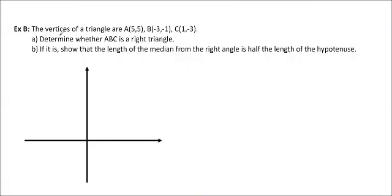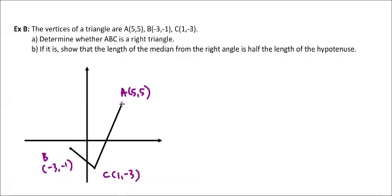We're going to do one more example. The vertices of a triangle are A(5,5), B(-3,-1), and C(1,-3). Determine whether ABC is a right triangle, and if it is, show that the length of the median from the right angle is half the length of the hypotenuse. I'm going to draw out this triangle, just a quick sketch, because I'm going to cheat a little bit. I'm only going to find the slopes of what I think is going to be right angles. I don't want to find them all. I know there's only three, but if I could find just two, I think that would be better.